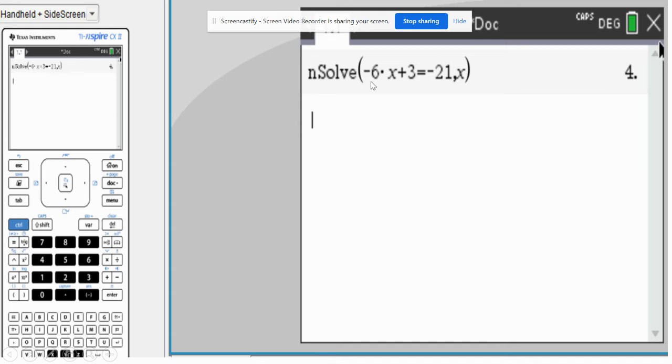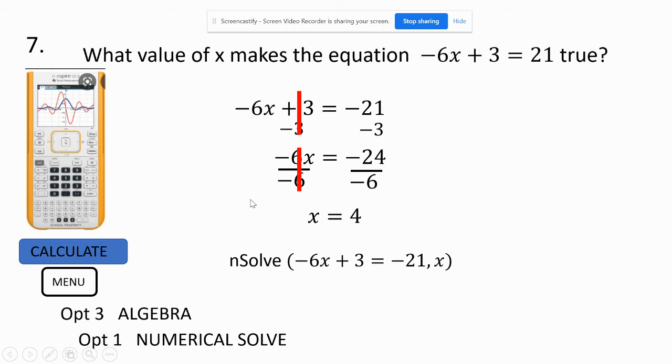And then you're going to type in the problem that we had there, the -6 times x plus 3 equals -21. And you have to put a comma in the variable, because we're solving for x. We have to use the letter x. And it tells me the answer is 4, which is what we got right there. You have to type it in exactly as it's written with a comma in the variable.